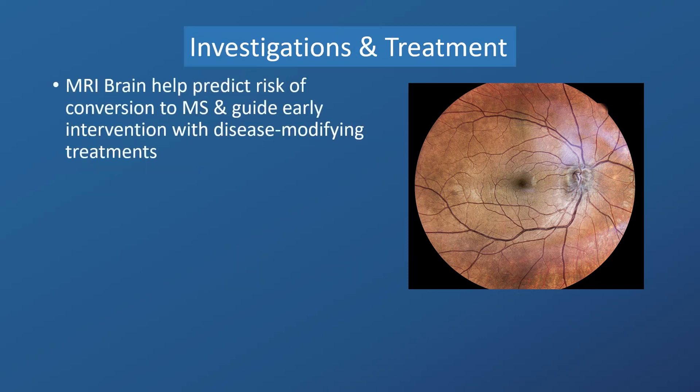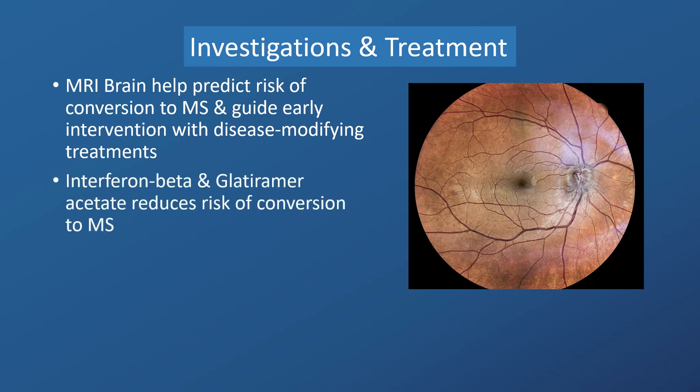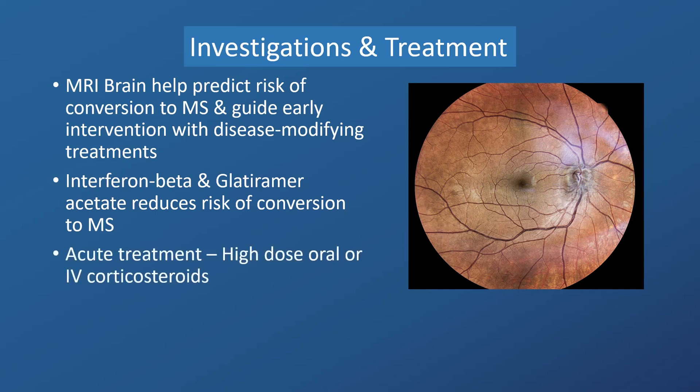Investigations, including MRI of the brain, can help to predict the risk of conversion to MS, and can dictate early intervention with disease-modifying treatments, like interferon-beta and glatiramer acetate. These reduce the risk of conversion to MS. Acute treatment for idiopathic optic neuritis includes high-dose oral or intravenous corticosteroid.